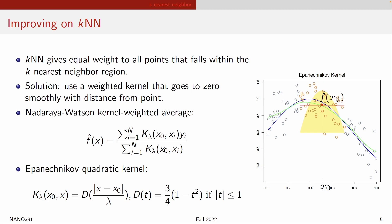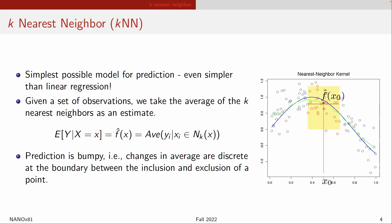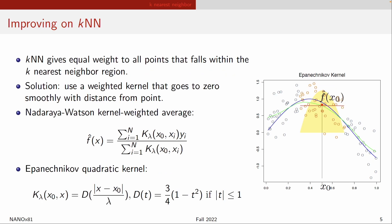By using a weighted kernel, you are smoothing out your predictions. You no longer have a sharp jump when you move your kernel from one location to another. In the k-nearest neighbor algorithm you have a uniform equal weight across all data points — this green line shows a very bumpy predicted value. With a weighted kernel average, you get a very nice smooth prediction curve.